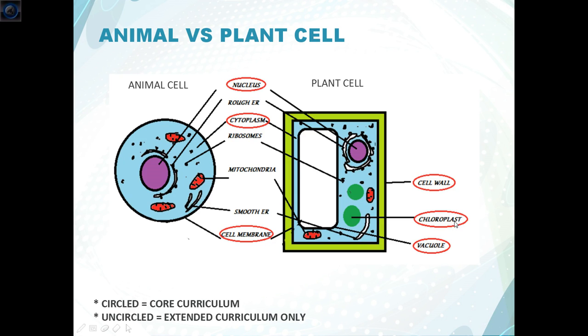Secondly we've got the chloroplast which is a structure represented by green circles here. These are found in the cytoplasm and they contain something called chlorophyll which is used to trap light energy for photosynthesis.